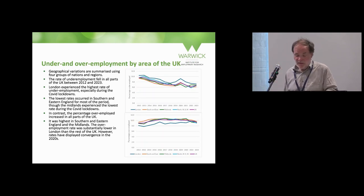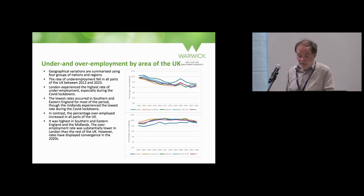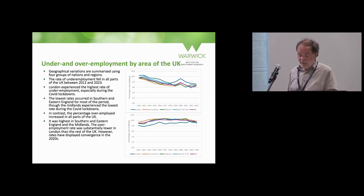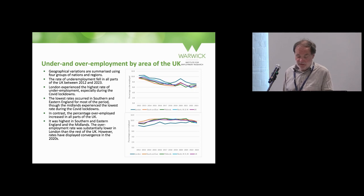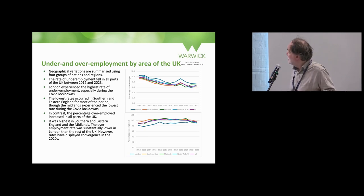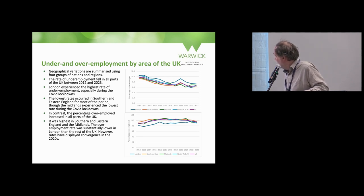Looking at a quick summary of geographical variations by broad region of the UK — the underemployment rate fell in all parts of the UK. London experienced the highest rates of underemployment, especially during the COVID lockdowns. Lowest rates were in southern and eastern England for most of the period. The rate of overemployment, in contrast, increased in most parts of the UK, and was highest in southern and eastern England and the Midlands, with some convergence in the 2020s.